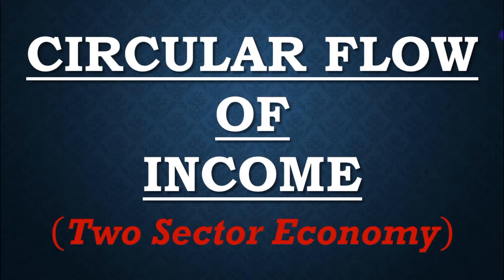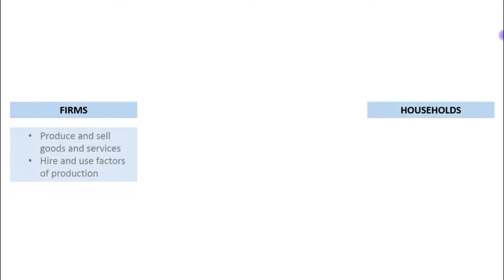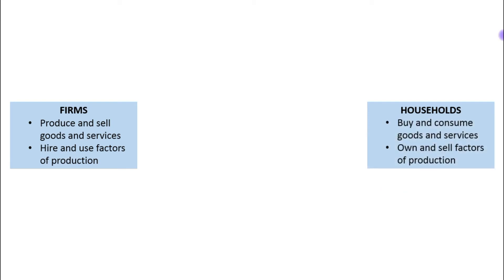Hello students, today we are going to start with the topic circular flow of income in a two-sector economy. In this model, the economy is simplified to include only two types of decision-makers: first one is firms and the other one is households. Firms produce goods and services using factors of production. Households own the factors of production and consume all the goods and services that the firms produce.